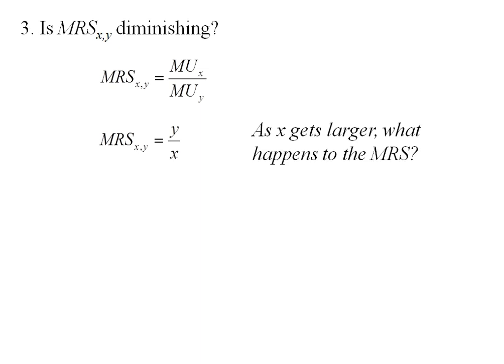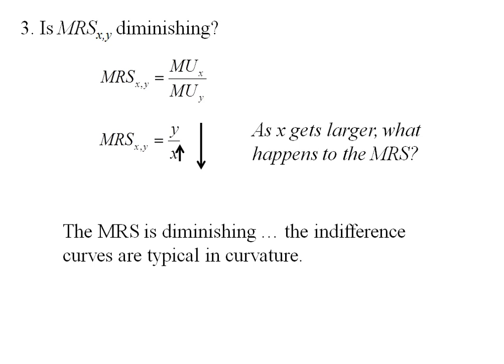Now, as x gets larger, what's happening to our MRS? That's the real question here. So I like to do this with arrows. I'm increasing x, and I see that that makes the entire expression fall. So the marginal rate of substitution is diminishing. This tells us the indifference curves have the typical curvature. That is, they're going from steep to flat. The rate of substitution starts out higher and gets lower.